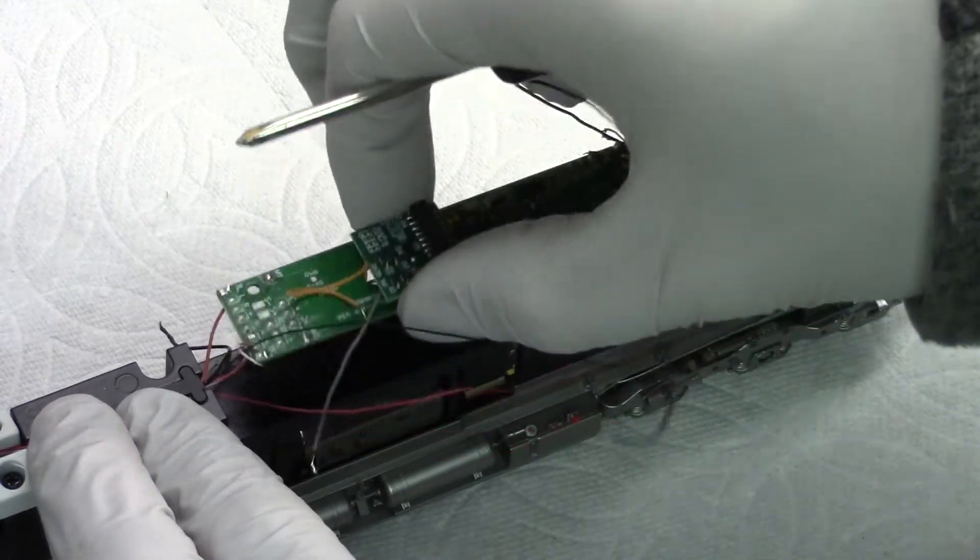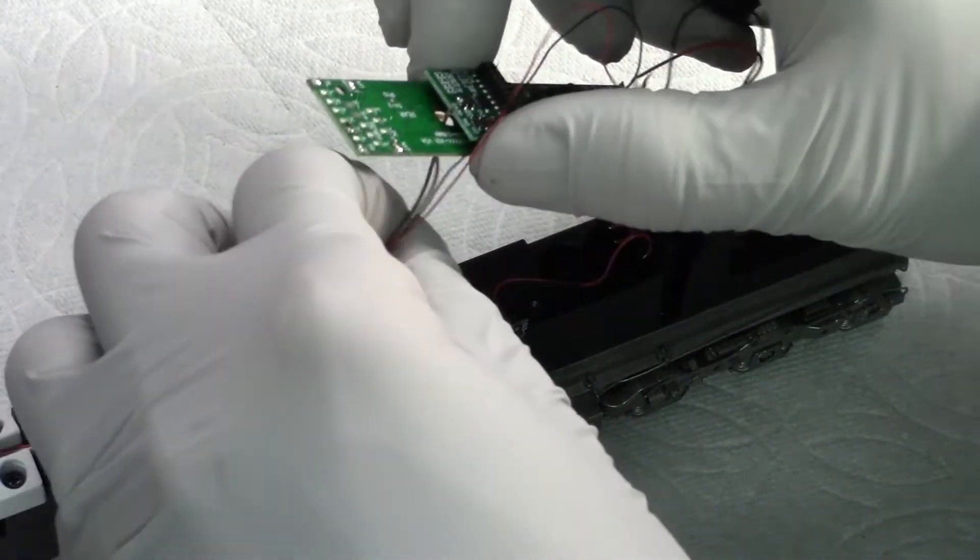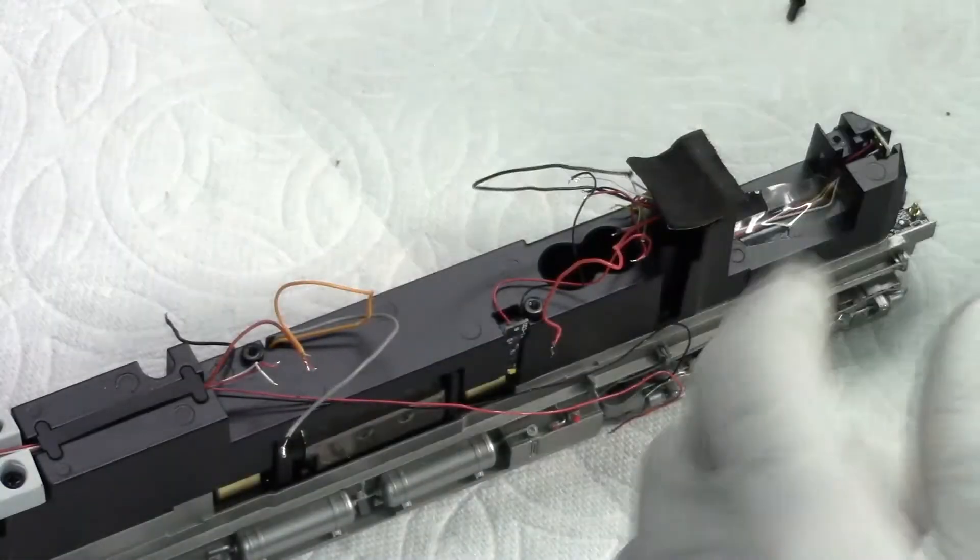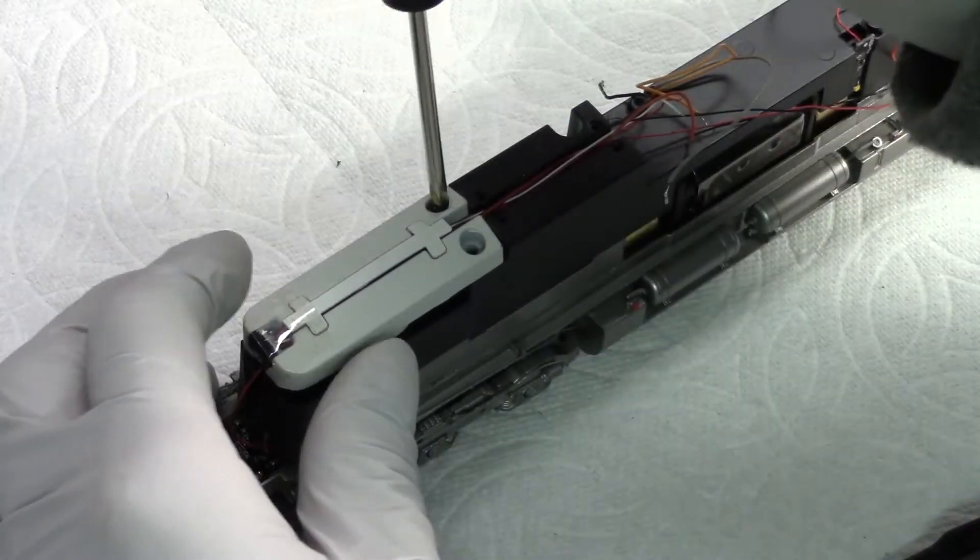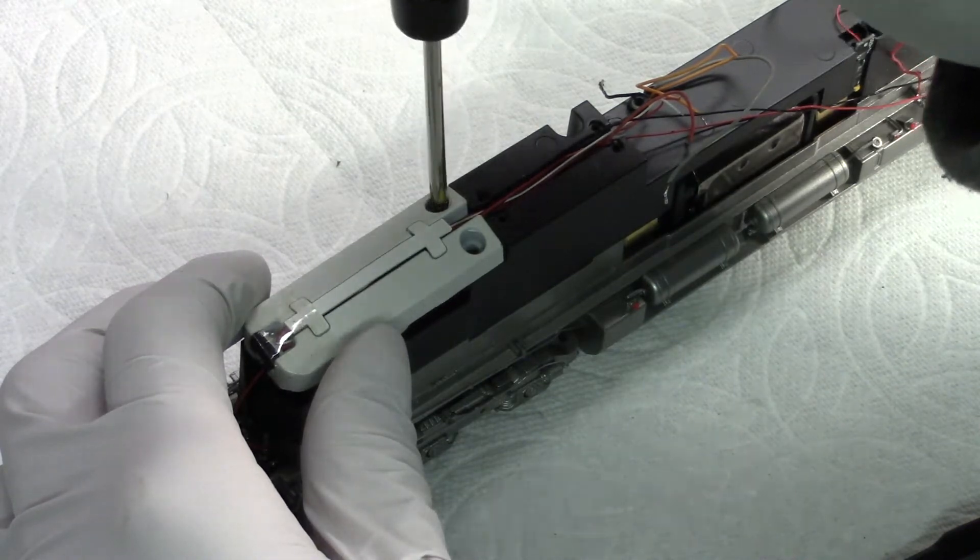And then I carefully removed the board from the chassis. In order to disassemble the main weight on the model you will also need to remove this smaller weight found at the rear.